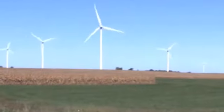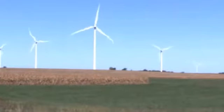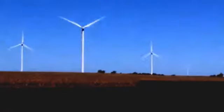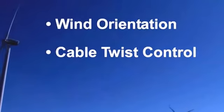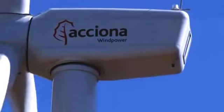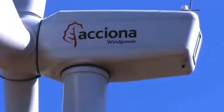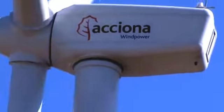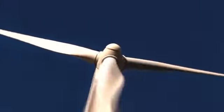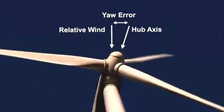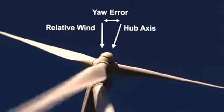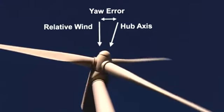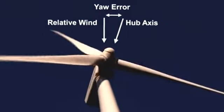The wind turbine yaw control system provides two functions that are crucial to safe and efficient operation: wind direction orientation and cable twist control. The nacelle must point directly into the wind for maximum efficiency. Also, a rotor disc that is not perpendicular to the relative wind experiences higher loading on the portion of the disc closest to the wind. This can lead to accelerated fatigue of the blades.